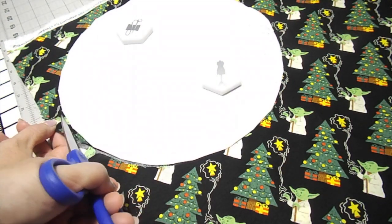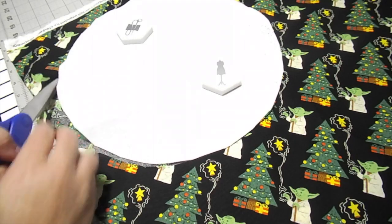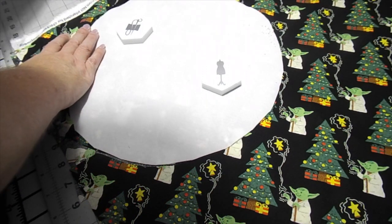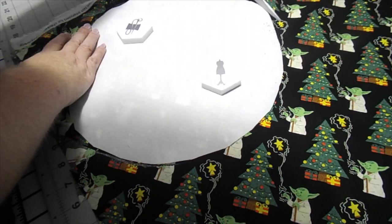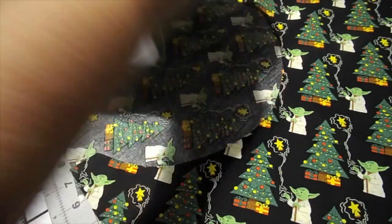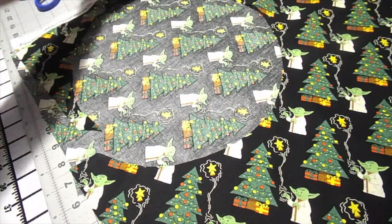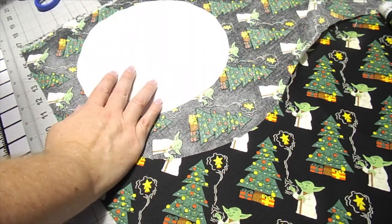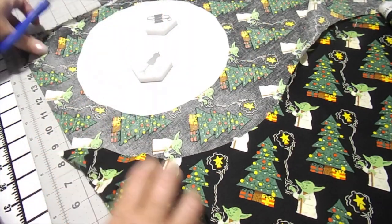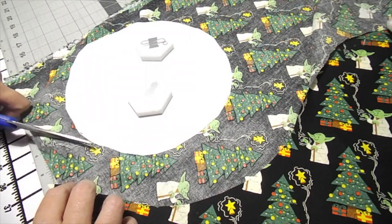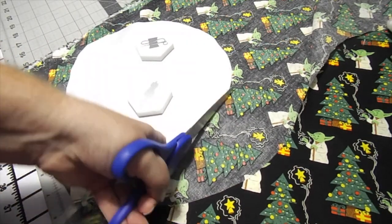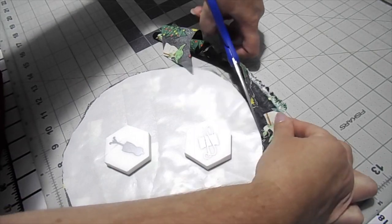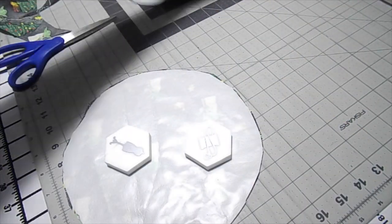Cute little Yoda is going to be so awesome for Christmas. I'm going to have a matching large bowl and a smaller bowl so that one's done. Now I'm going to take my smaller piece. Grab my fabric weights so that stuff doesn't go anywhere. And then you're just going to do the same thing. Cut right around the edges.